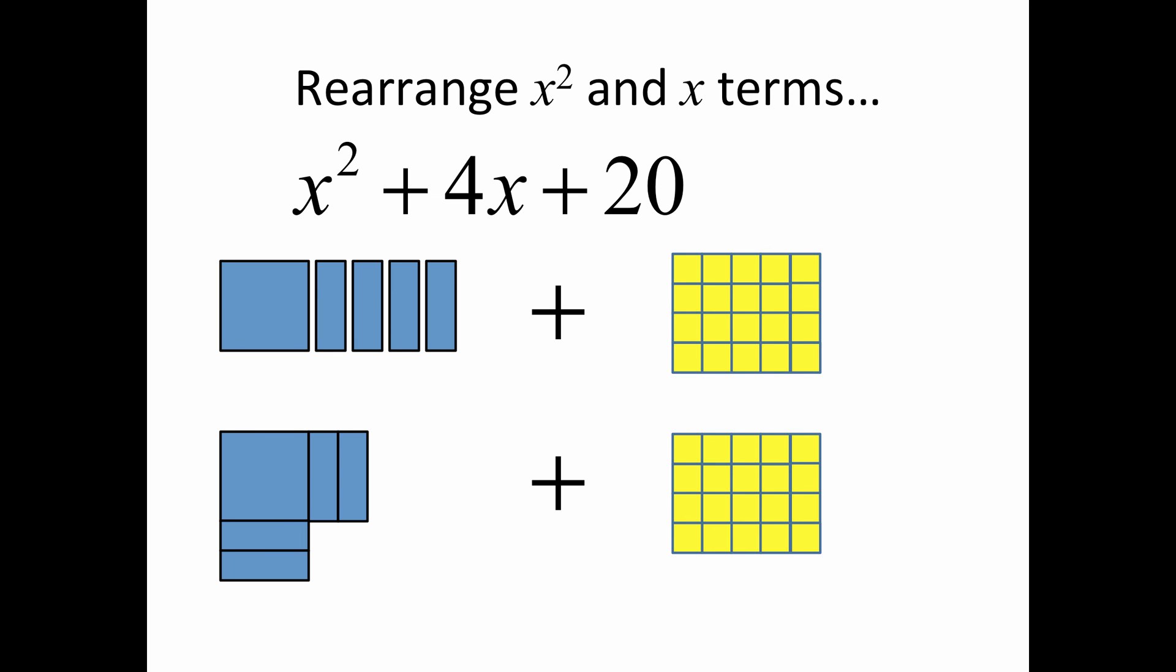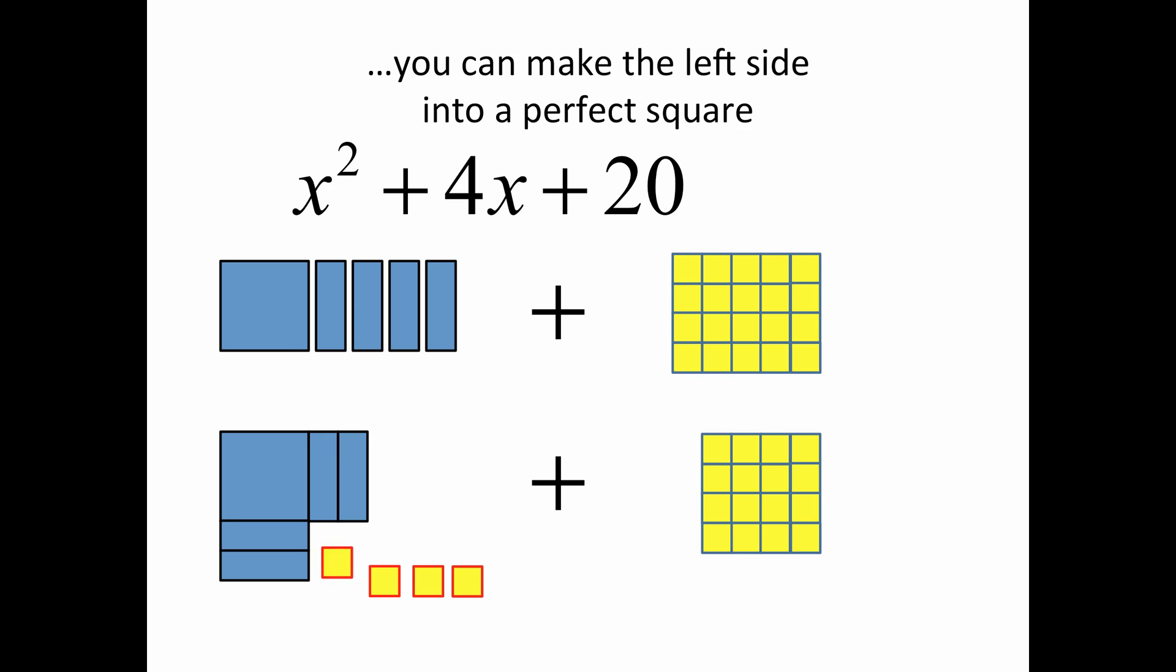On the left side, we have a square with four x's, but we've rearranged them, leaving an open space in the lower right-hand corner. We borrow four units and put them into the empty space and complete the square.